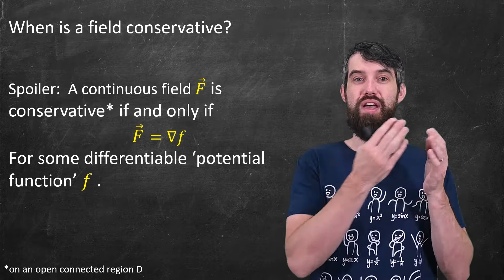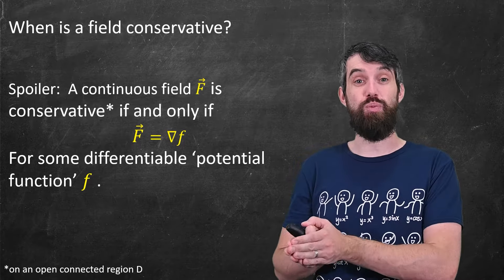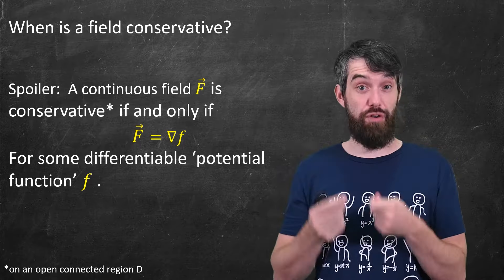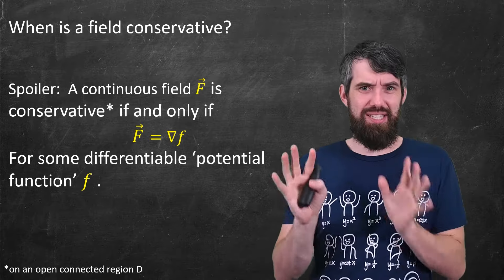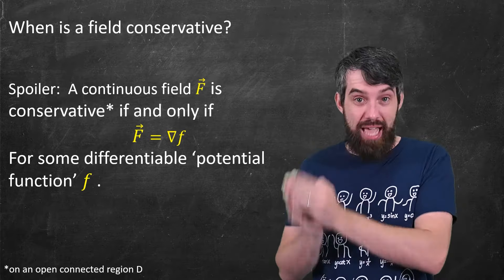And this is an if and only if. So the vector field able to be written this way implies conservative and vice versa. So I'm leaving the statement here without any attempts to prove it or justify it yet.